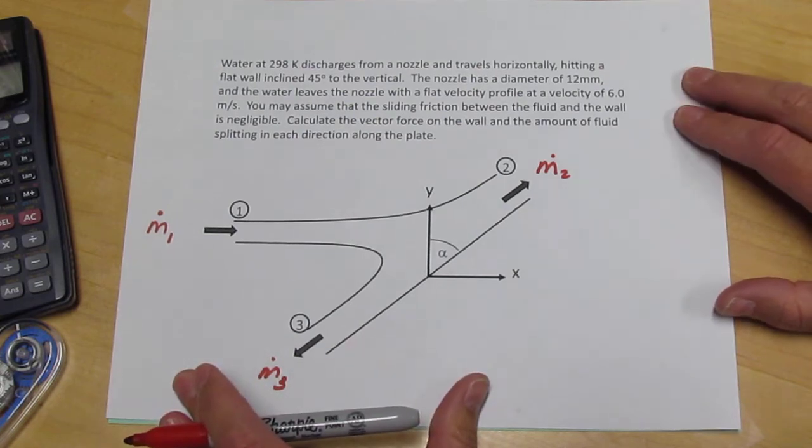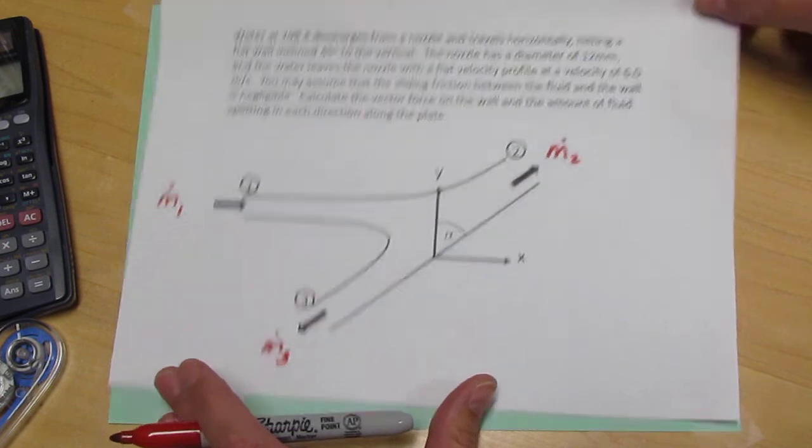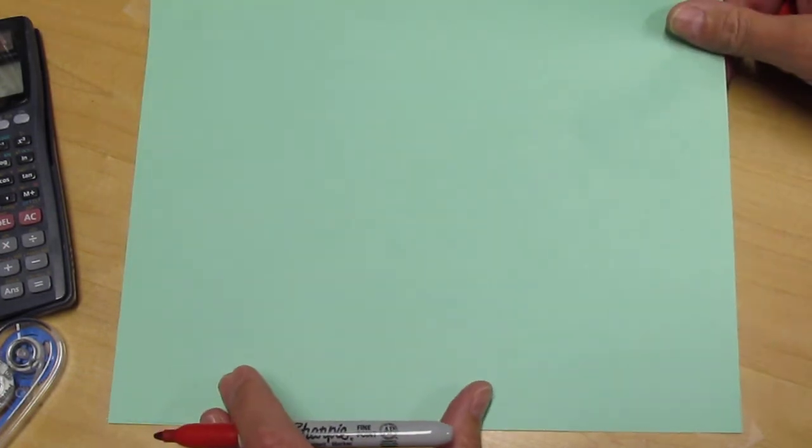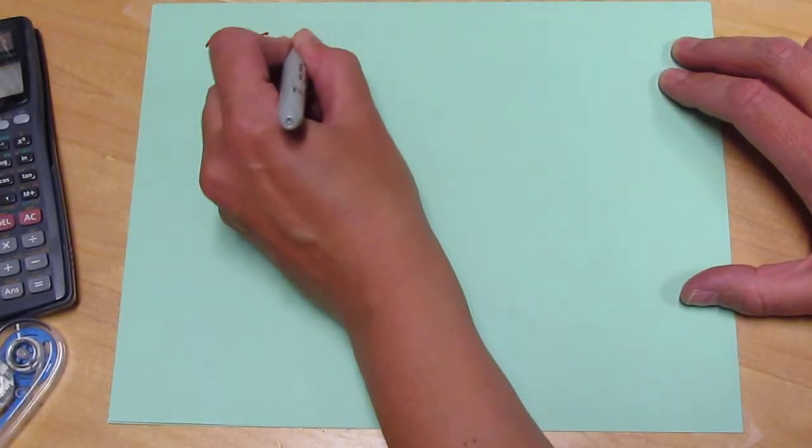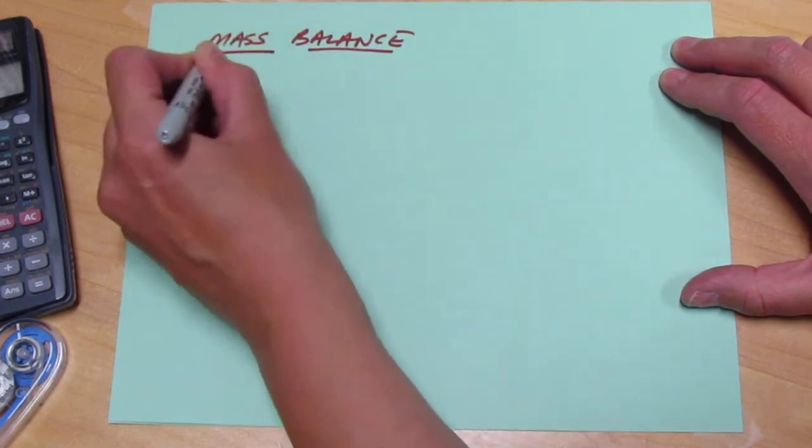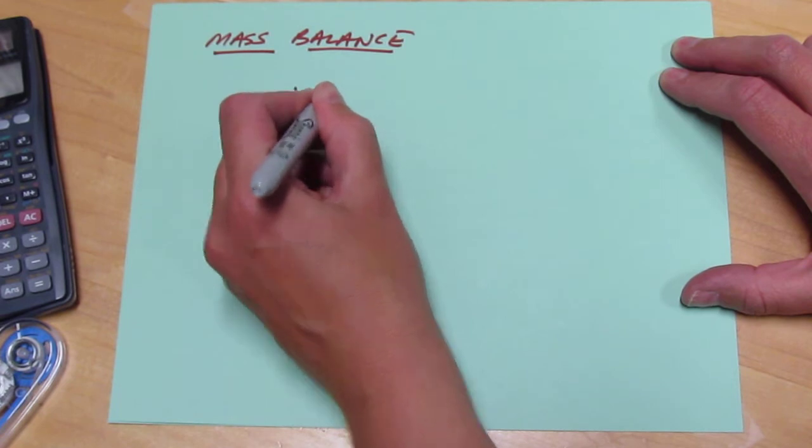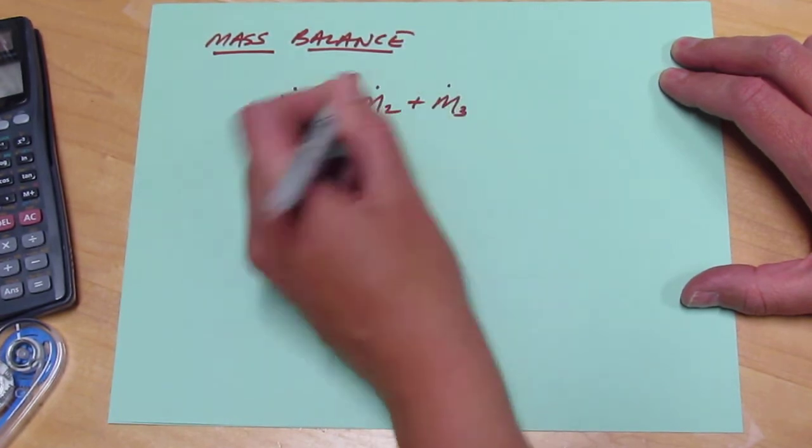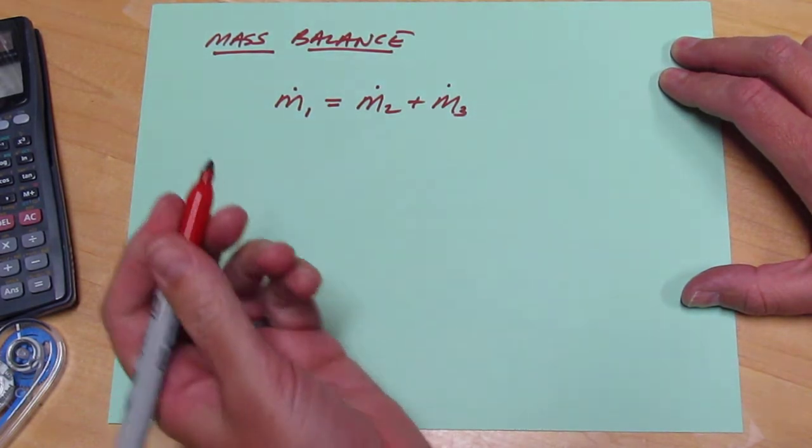So when encountering a difficult problem like this, we should really start at the beginning. And the simplest physics that we want to apply is the mass balance. So the mass balance for this problem is that M1 fluid comes in and M2 plus M3 fluid come out. That's going to be helpful to us.